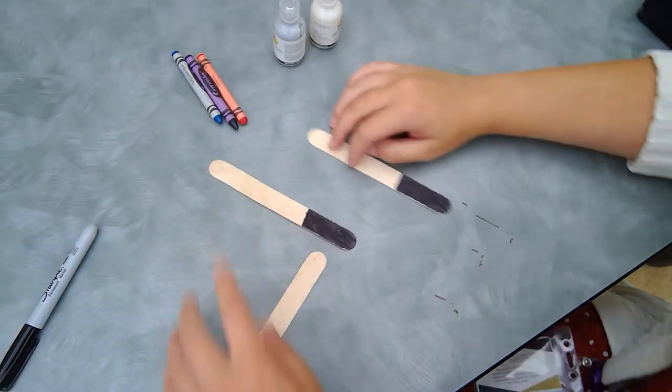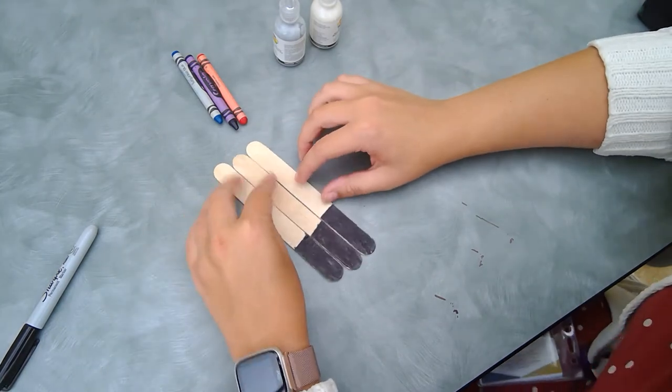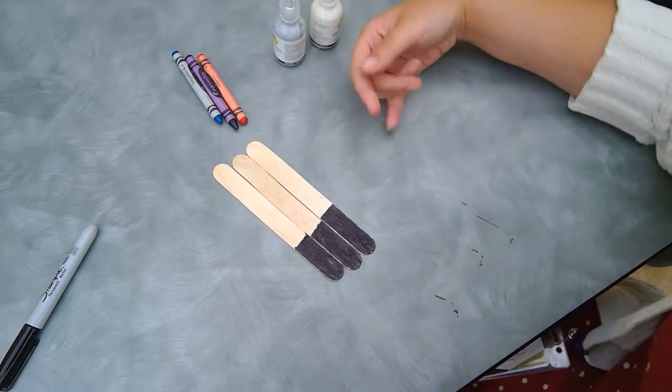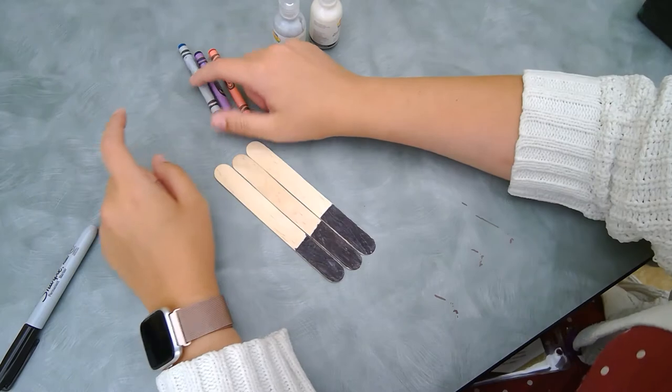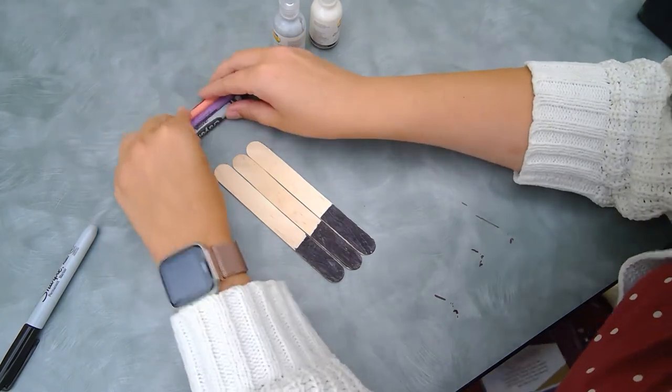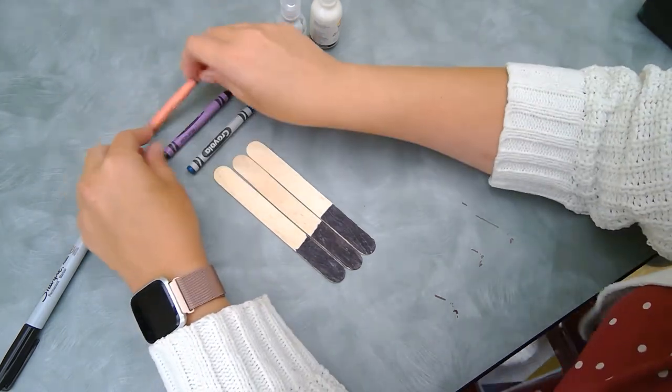Alright, so we've got our three lightsabers with our three handles. As you can see I made a little bit of a mess, so perhaps you guys would like to put a paper towel down or do it on top of a placemat, whatever you'd like to do.